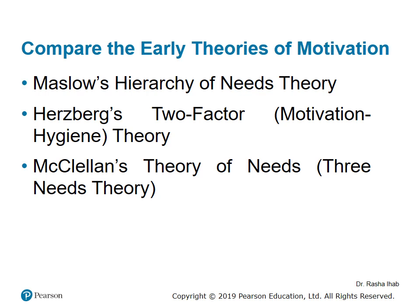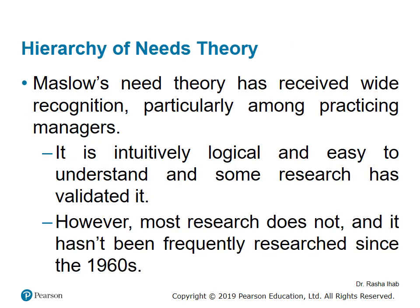We're going to discuss three early theories of motivation in this chapter. The first is Maslow's hierarchy of needs. The second is Herzberg's two-factor motivation hygiene theory. And the last is McClelland's theory of needs — the three needs theory. You're not supposed to memorize the name of the scientist, just memorize the name of the theory itself.